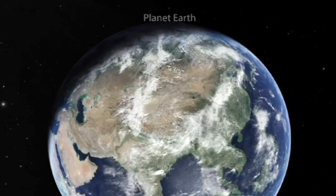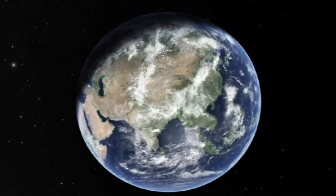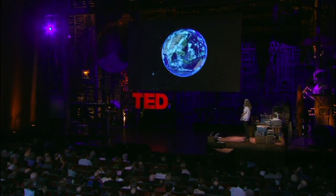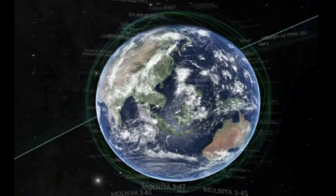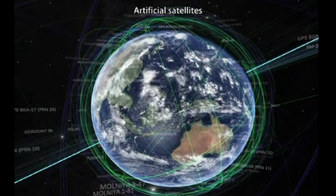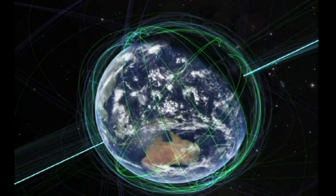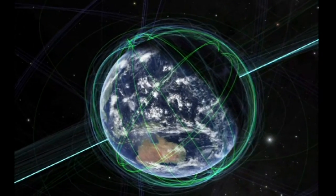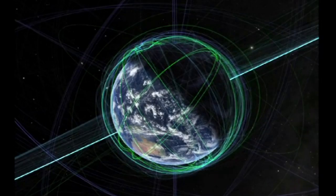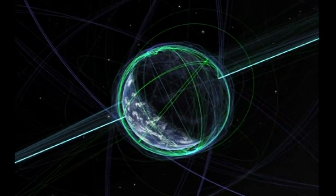The Digital Universe Atlas has been built at the American Museum of Natural History over the past 12 years. We put that together as a project to really chart the universe across all scales. What we see here are satellites around the Earth and the Earth in proper registration against the universe as we see.